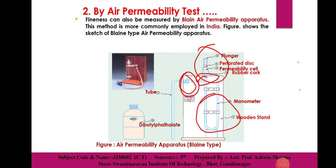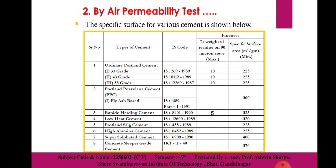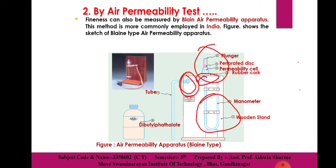Fineness can also be measured by the Blaine air permeability apparatus. This method is more commonly employed in India. This sketch is important and is related to the GTO examination. In India, this method is widely used.